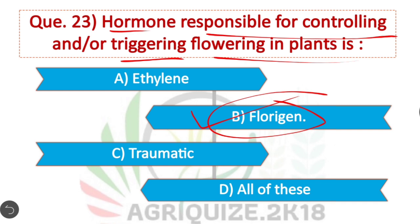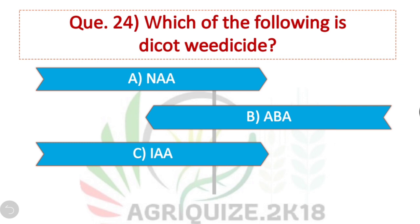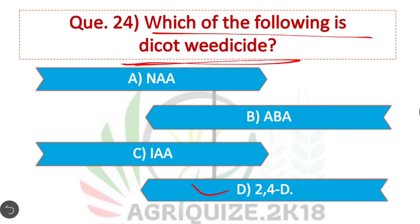Question 24: Which of the following is a dicot herbicide? 2,4-D is a dicot herbicide — it is a synthetic auxin. It is not effective against monocot species.